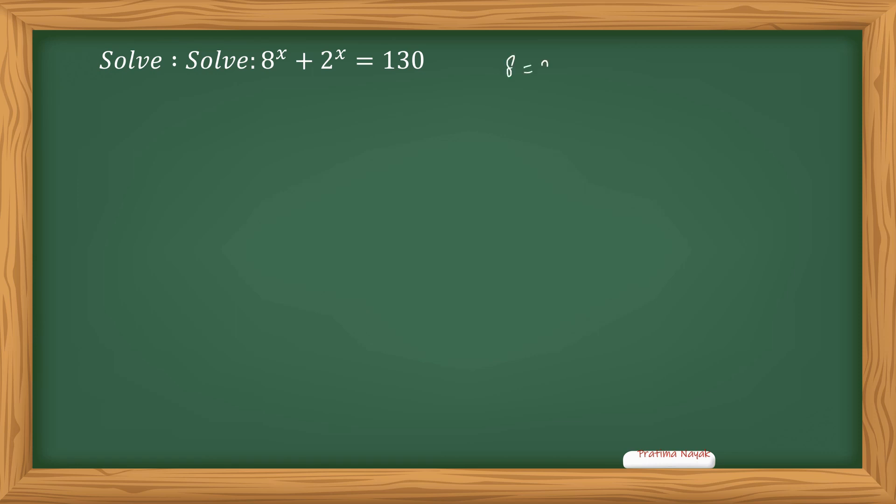8 is equal to 2 to the power 3, and we know the law of exponents that a to the power m raised to the power n is the same as a to the power m times n. All this can be written as a raised to the power mn.